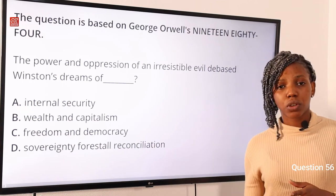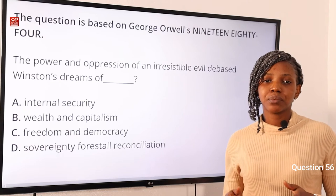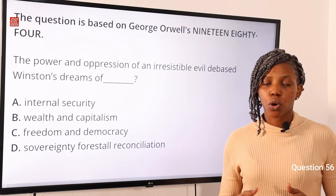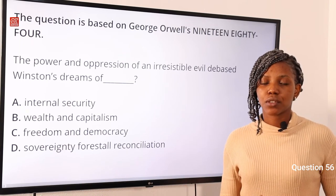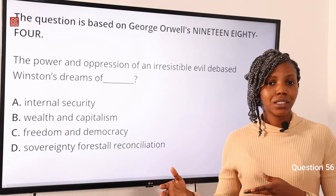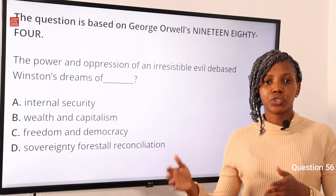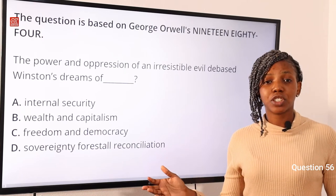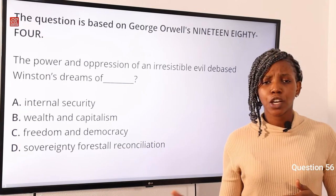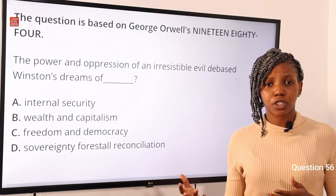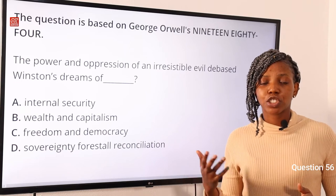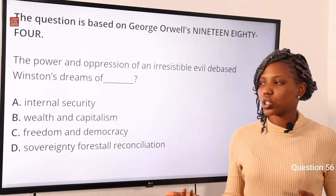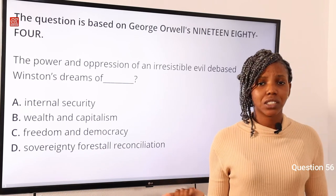In page 22 of this text, Winston has to write something in his diary — his dreams or what he wishes to get. He writes to the future or to the past, to a time when truth is free, to a time when truth exists. This talks about freedom and democracy. We see him continuously trying to get freedom, trying to be free from the totalitarian system, trying to rebel — first secretly, then openly. So option C is the correct answer to this question.